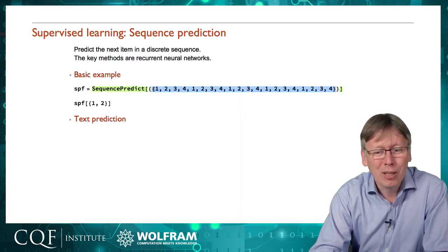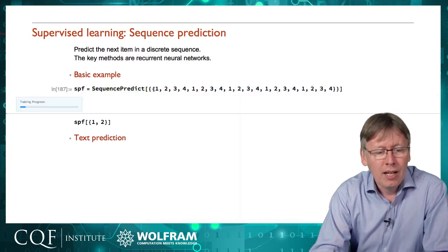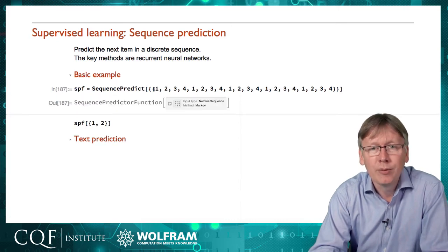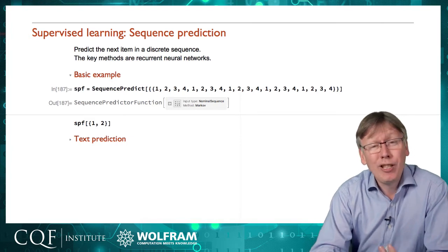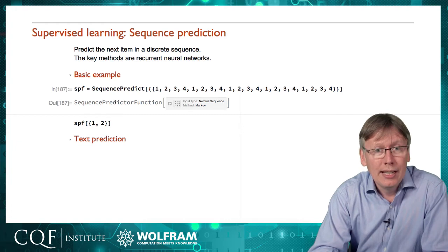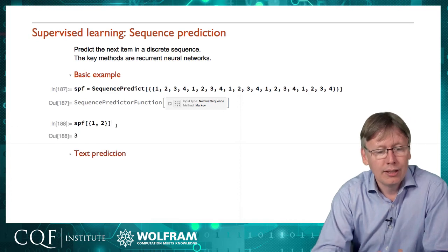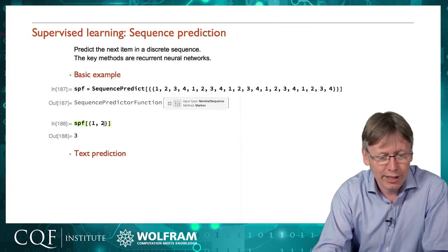As humans we can pretty much predict what's going to happen next in this sequence. I'm going to train on that, and it's going to use a new method we haven't talked about — finding hidden Markov chains. The Markov method produces a predictor just like other predictors. It's going to make a prediction of what comes next, and even though it hasn't seen a strict sequence of 1, 2, it's seen enough of that in the data to figure out that probably what comes next is a 3.